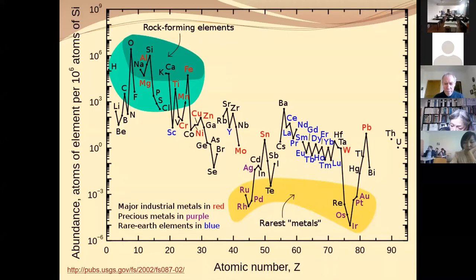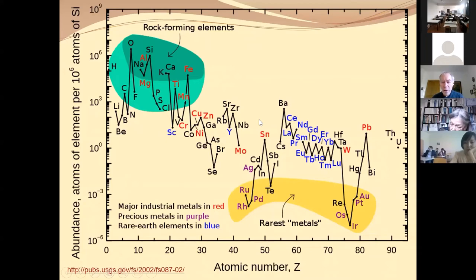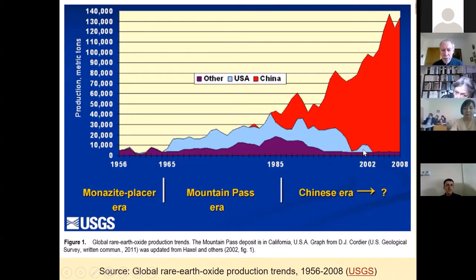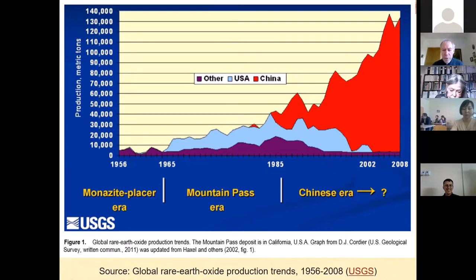These rare earth metals are not actually so rare — you can find them in many places. For example, lithium, used for lithium batteries, is not so rare and it's possible to mine and use. But the problem is that practically all rare earth metals are mined and exported from China, so the rest of the world becomes very dependent on China. The United States was once an important source, but China sells them more cheaply. Now Sweden is starting to look for rare earth metal mining, and perhaps Uzbekistan as well.